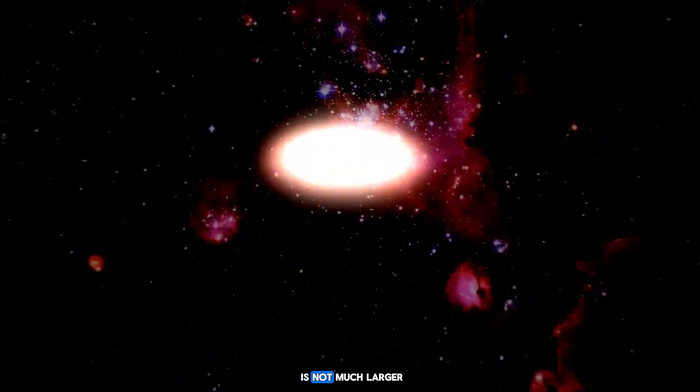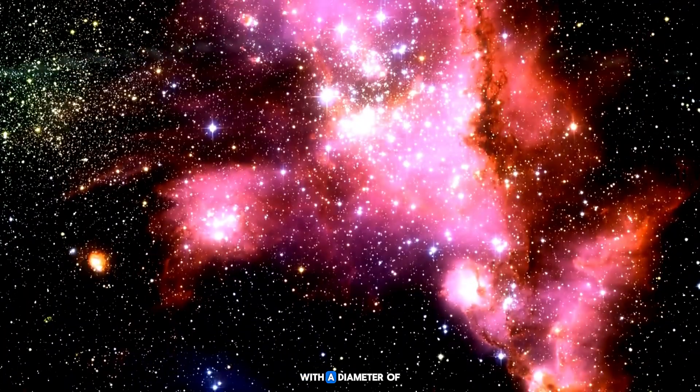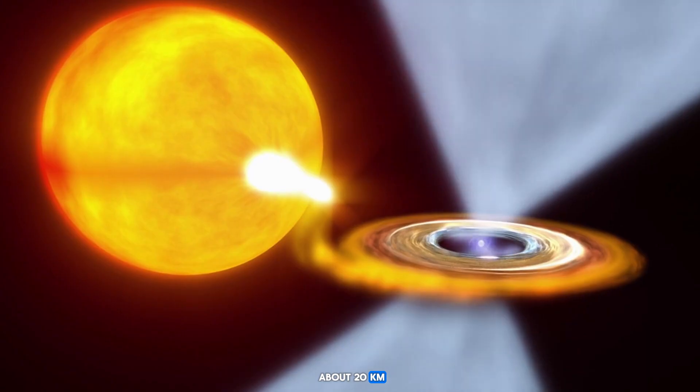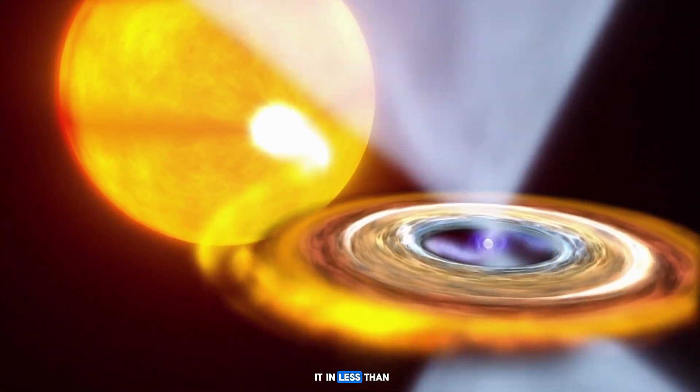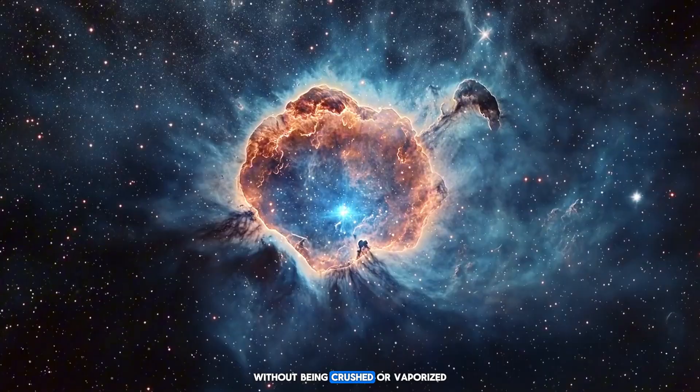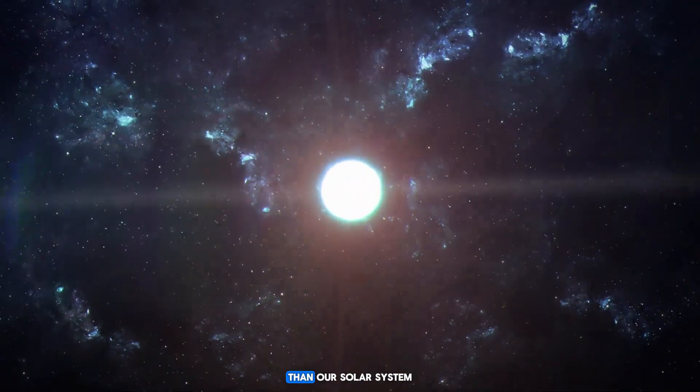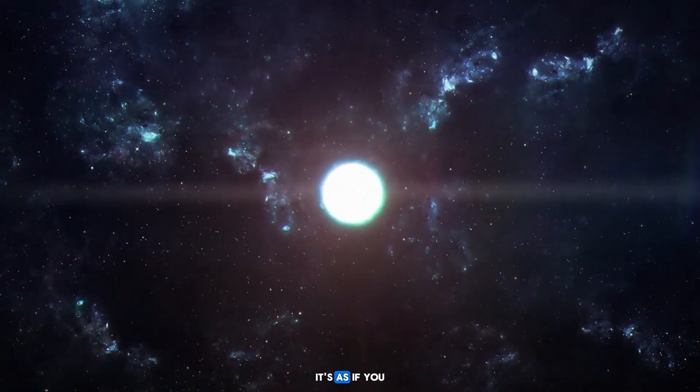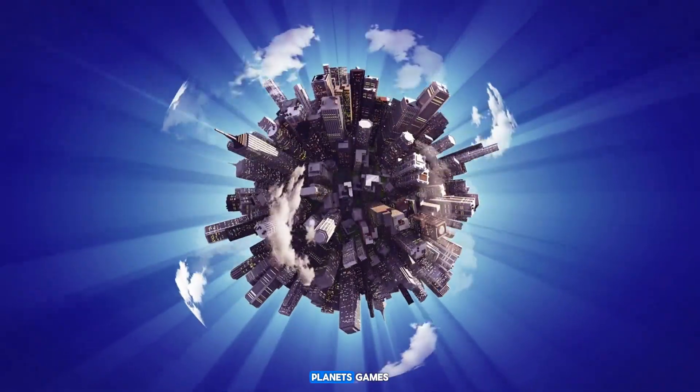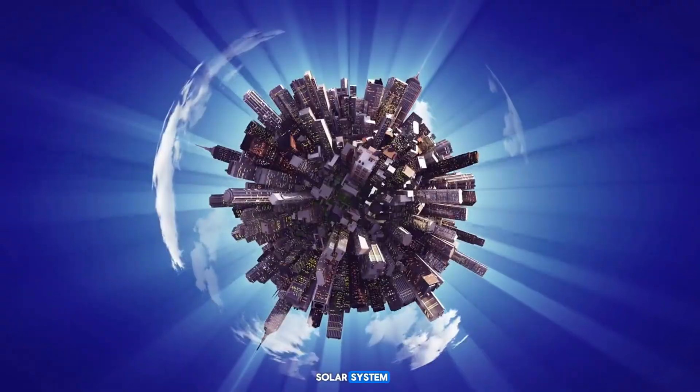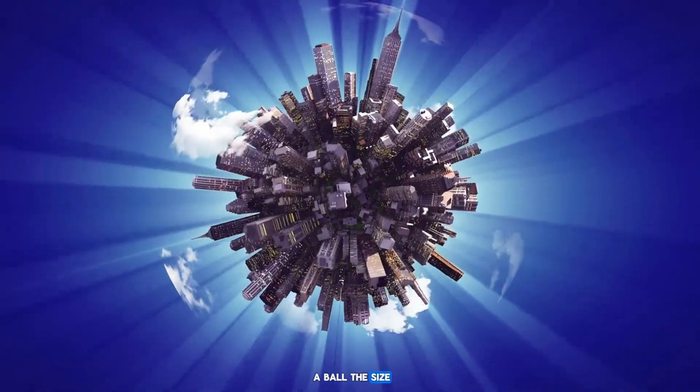A typical neutron star is not much larger than a city, with a diameter of about 20 kilometers. You could drive across it in less than an hour if you managed to land on it without being crushed or vaporized. But this small space contains more mass than our solar system. It's as if you took all the people, planets, games, and oceans in our solar system and crammed them into a ball the size of Manhattan.